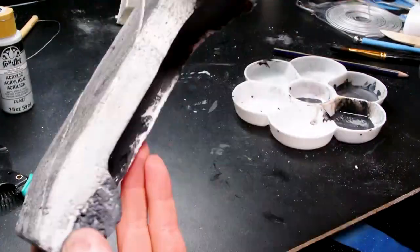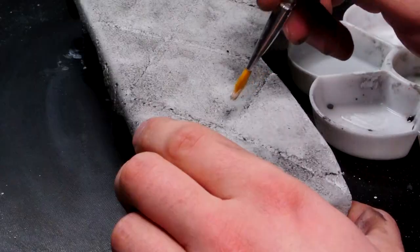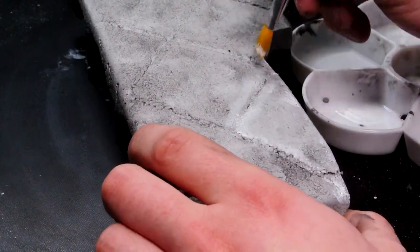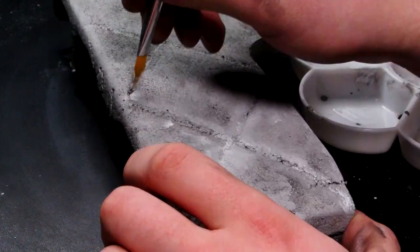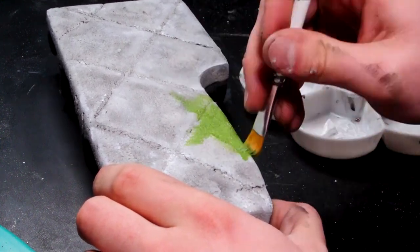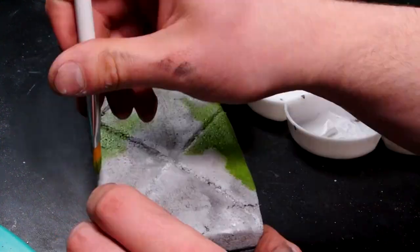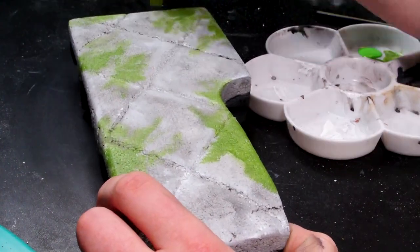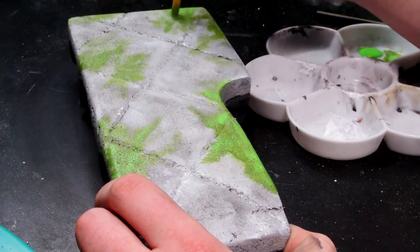Once I was done with the wash, I then added some dry brushing highlights to the whole thing, and then to add some final touches I added some moss green paint throughout the entire thing to kind of give it a little more grungy look. Don't worry, I am going to come in at the very end and add some actual final grass and rock details once I had already started putting everything together.